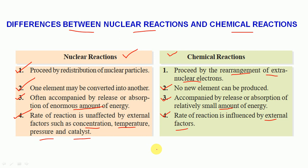For chemical reactions: first, preceded by rearrangement of extra-nuclear electrons. Second, no new element can be produced. Third, accompanied by release or absorption of relatively small amount of energy. Fourth, rate of reaction is influenced by external factors.